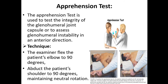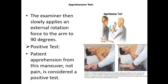Apprehension test: This test is used to test the integrity of the glenohumeral joint capsule, or to assess glenohumeral instability in an anterior direction. The examiner flexes the patient's elbow to 90 degrees, abducts the shoulder to 90 degrees maintaining neutral rotation, then slowly applies an external rotation force to 90 degrees. Apprehension from the patient without pain is considered a positive test.